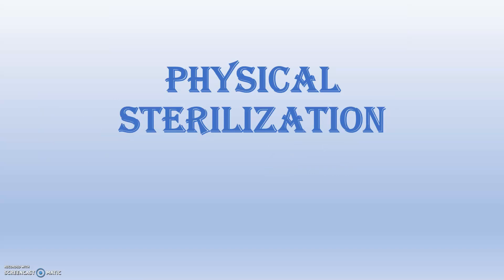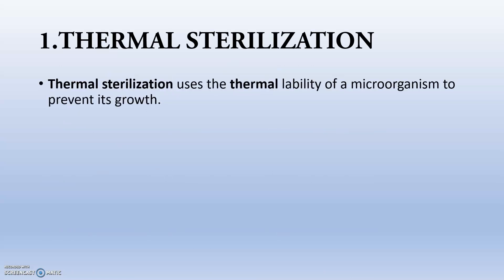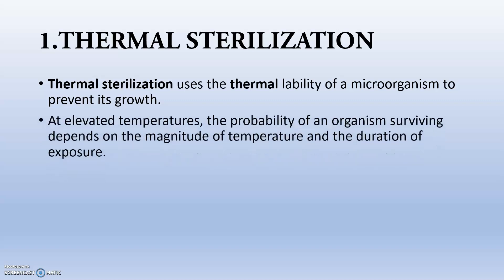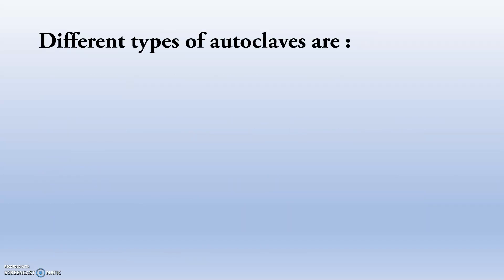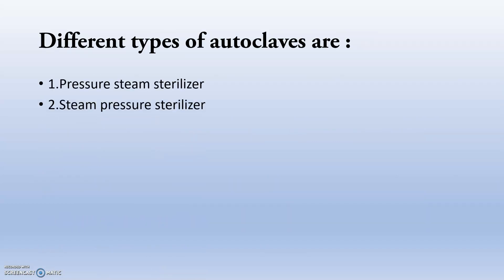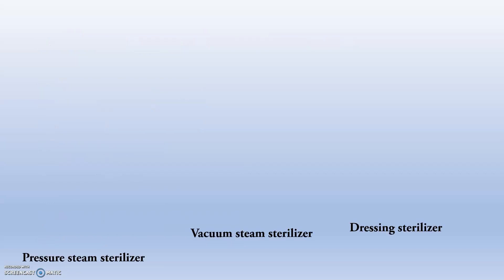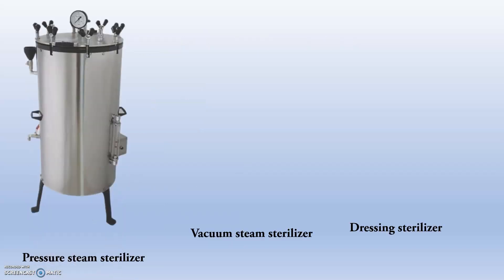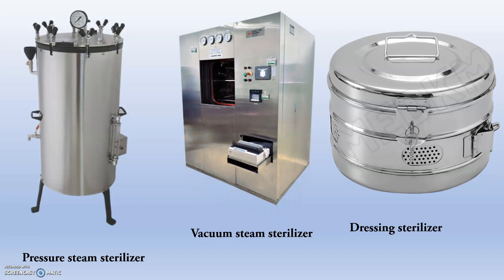Moving to physical sterilization — the first one is thermal sterilization. Thermal sterilization uses the thermal lability of the microorganism to prevent its growth. At elevated temperature, the enzymes of the microorganisms won't be working or they will get degraded and they get destroyed. Different types of autoclaves used are pressure steam sterilizer, steam pressure sterilizer, vacuum steam sterilizer, dressing sterilizer, and gravity displacement sterilizer. We might have seen these things in our veterinary public health and veterinary surgery and radiology labs.